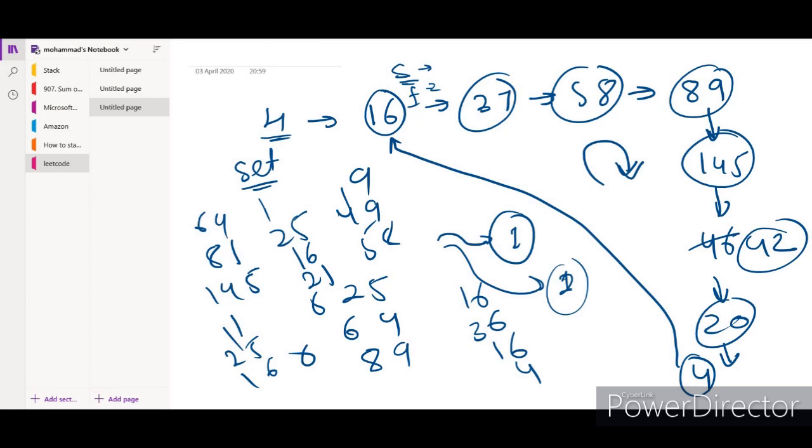There is a mathematical proof that for each number if it is not a happy number there will be a cycle. I will provide the proof in the description. It is a theoretical mathematical proof you can go through once. Also the Floyd cycle detection algorithm - I will provide the link to that. If you don't know that algorithm you can refer to that video and later solve this problem.